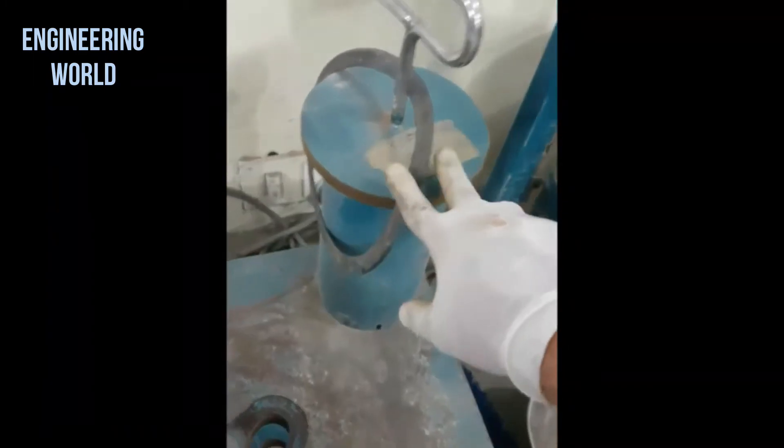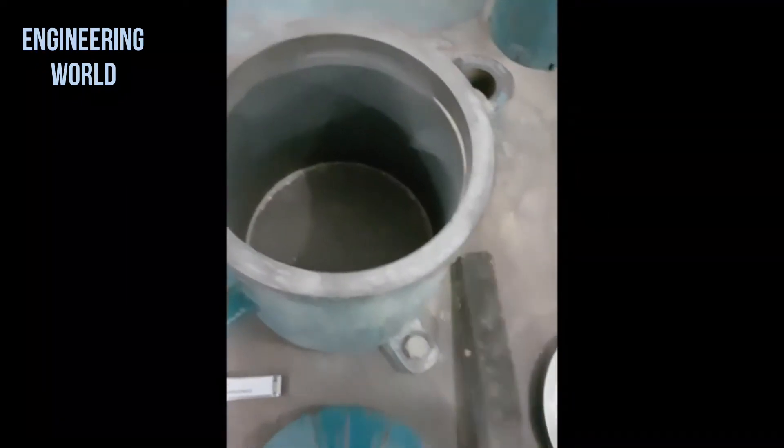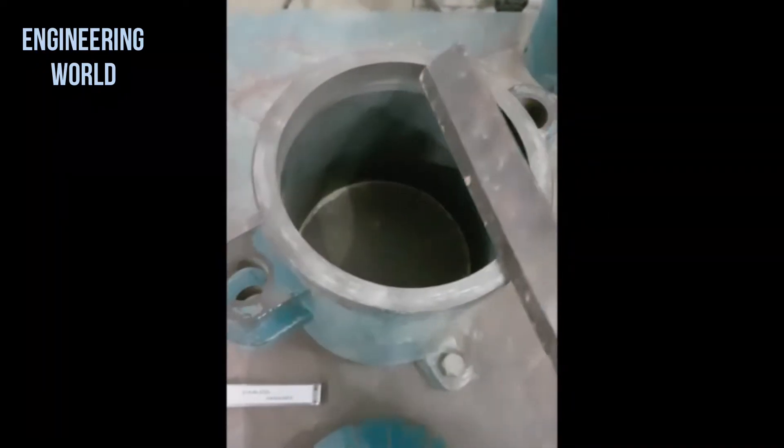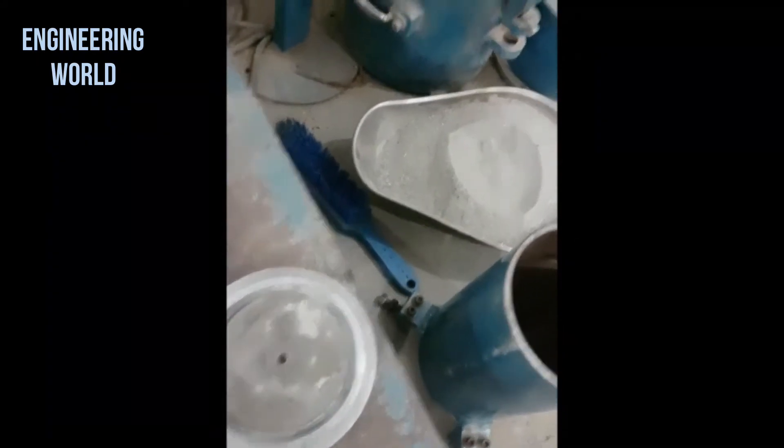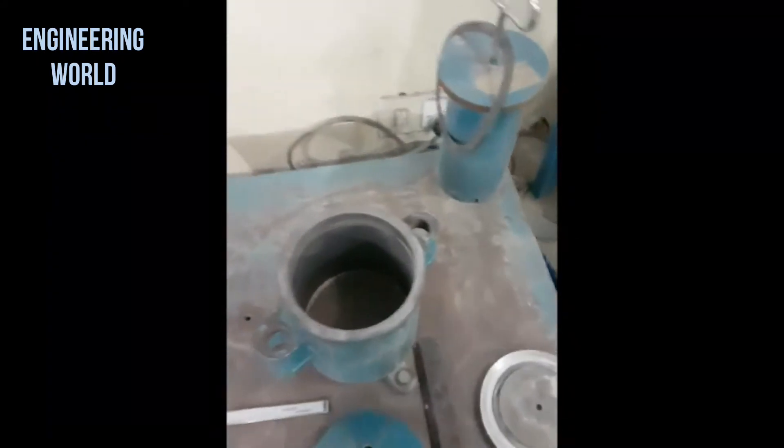Here is the surcharge base plate and this is the surcharge weight and this is a straight edge that we will use to strike off extra sand from the top of the mold. This is the guide sleeve of the mold through which the surcharge weight will pass through and this is the sand we will use.